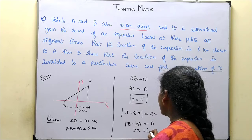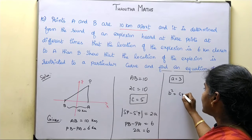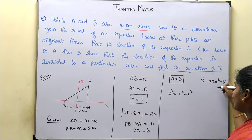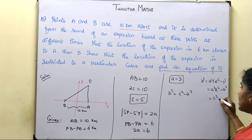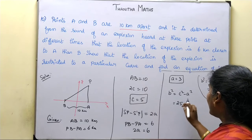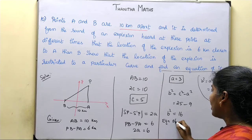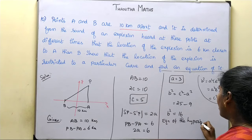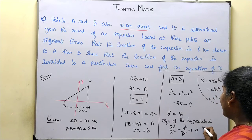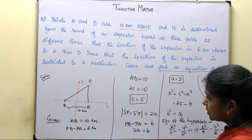So we have 2a equals 6, giving a equals 3. Now we find b using the formula: b squared equals c squared minus a squared. So b squared equals 25 minus 9, which equals 16. Therefore the equation of the hyperbola is x squared over a squared minus y squared over b squared equals 1, which gives us x squared over 9 minus y squared over 16 equals 1. This is our required equation.